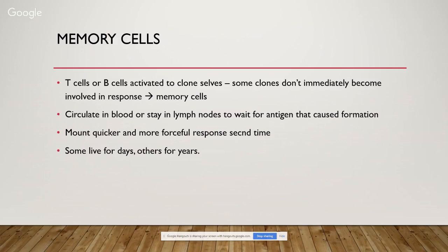Memory cells can be T or B cells; they are activated to clone themselves and those clones go out into the tissue. Most clones become involved in the immune response, but those that don't become memory cells, circulating in the blood or staying in the lymph nodes waiting for that antigen to return so they can create a bigger response. Some live for days, others for years. For example, Bordetella vaccine memory cells may last about six months, while rabies memory cells live for much longer.